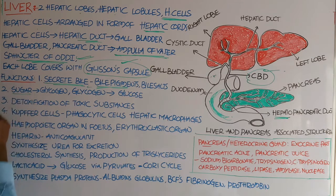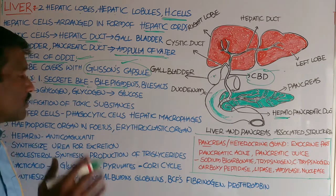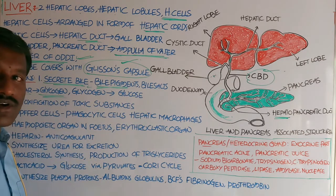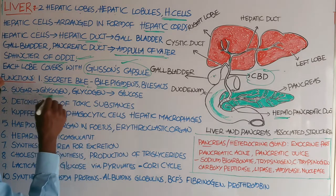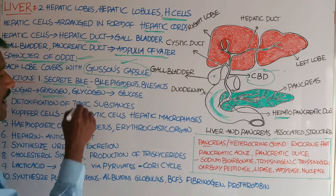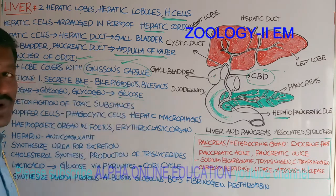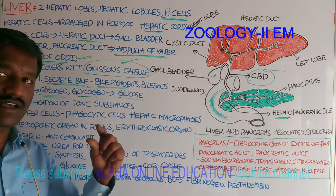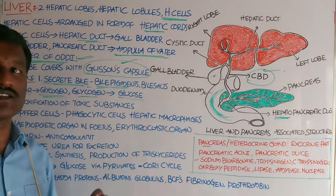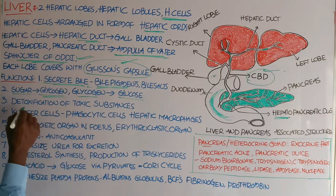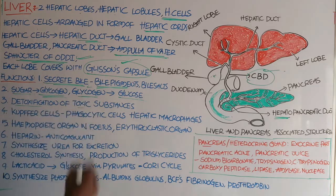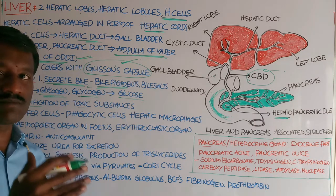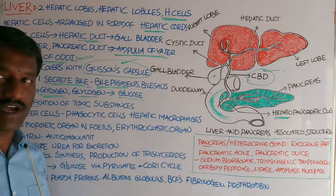Regarding sugar metabolism: glucose is converted into glycogen, a process called glycogenesis, and glycogen is converted back into glucose in a process called glycogenolysis. These carbohydrate metabolic reactions occur in the liver. The liver also helps in the detoxification of toxic substances present in the body.